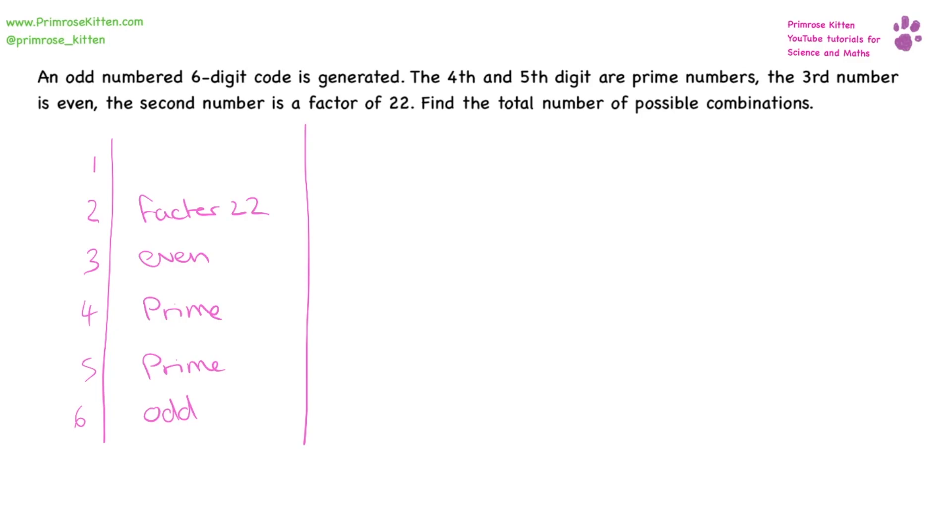So for the first one, because it is a code, codes can start with zero. So it can be zero, one, anything from zero through to nine, that gives us 10 possible numbers in that position. If we're looking for factors of 22, it can only be one or two. So we have two numbers in that position.